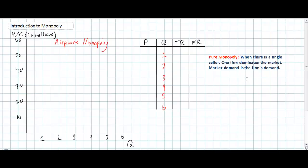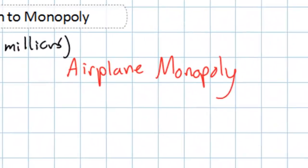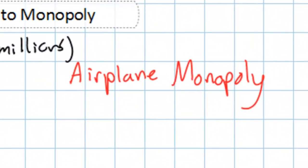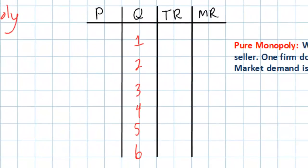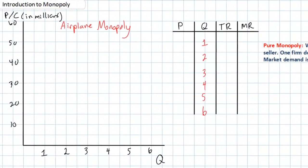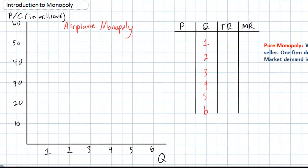In our graph on the left we're going to be examining the market for airplanes. We're assuming that the airplane market is a pure monopoly. In reality there are several companies that manufacture airplanes, but we are hypothetically referring to a purely monopolistic market in which there is only one firm supplying airplanes to the entire industry. They are considering producing up to six airplanes and charging prices ranging from zero to sixty million dollars, as we can see on the vertical axis.